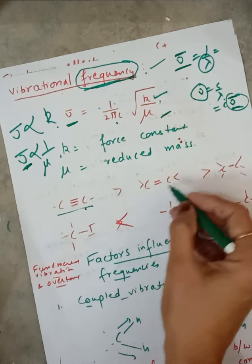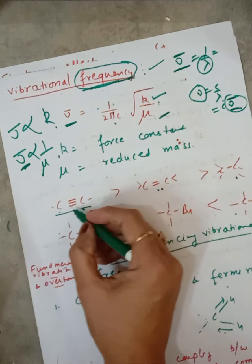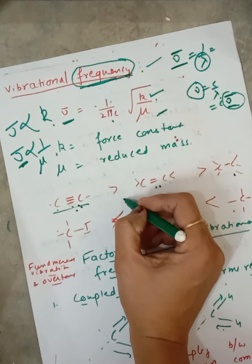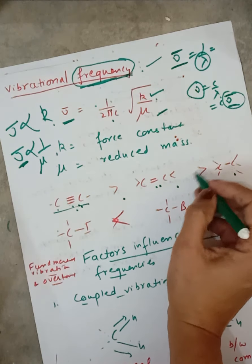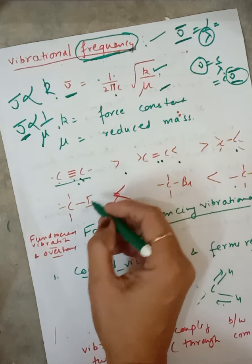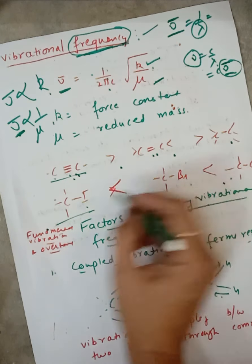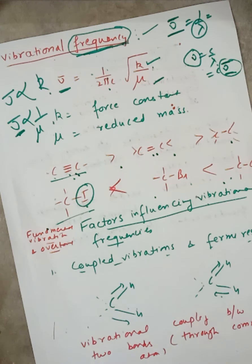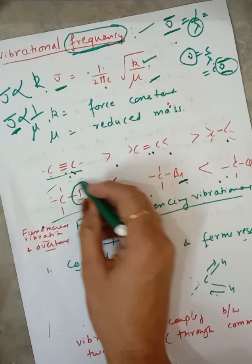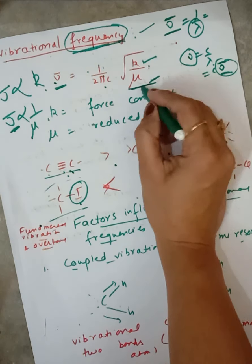That's why for C≡C triple bond, C=C double bond, and C–C single bond: since the force constant of a triple bond is higher, its vibrational frequency will be higher compared to a double bond, which in turn is higher than a single bond. Also, since iodine is heavier in mass than bromine, iodoalkane will absorb at lower frequency because vibrational frequency is inversely proportional to mass.